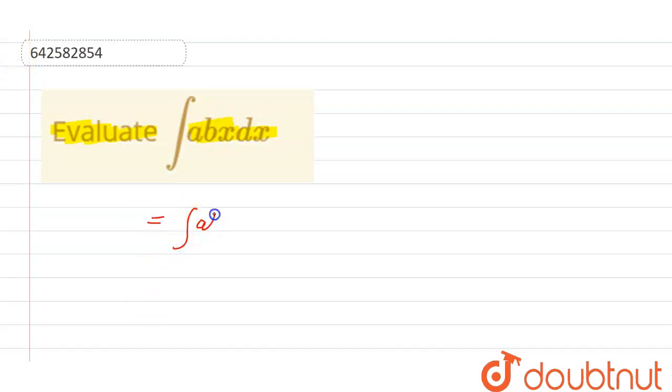So ab is a constant number, we can take it outside from the bracket. ab is a constant number, we will remain with x raised to the power 1 only.